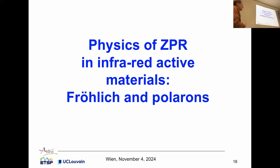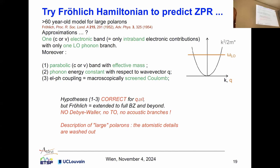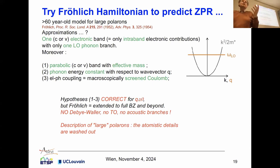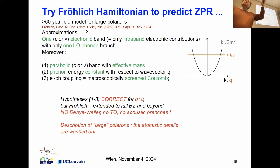Let's go to the physics of zero-point renormalization in infrared active materials, thanks to the Fröhlich model and its links with polarons. The Fröhlich model is a more than 60-year-old model to describe large polarons — composite objects of one electron dressed with phonons — called polarons because the electron polarizes the system: in an ionic material the positive charges are attracted and negative charges are repelled, forming such a composite particle. Whether it is a dynamical polarization or a more self-trapping static polaron will be discussed.